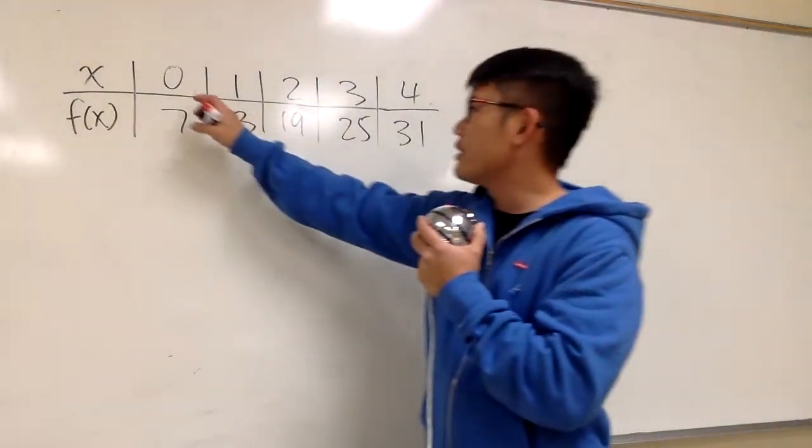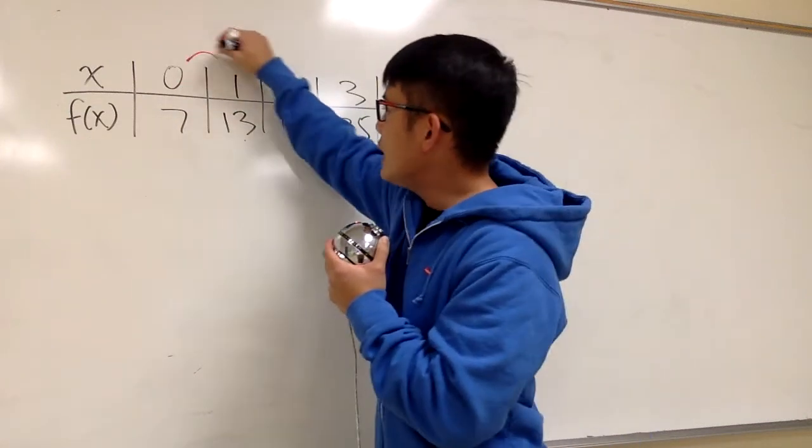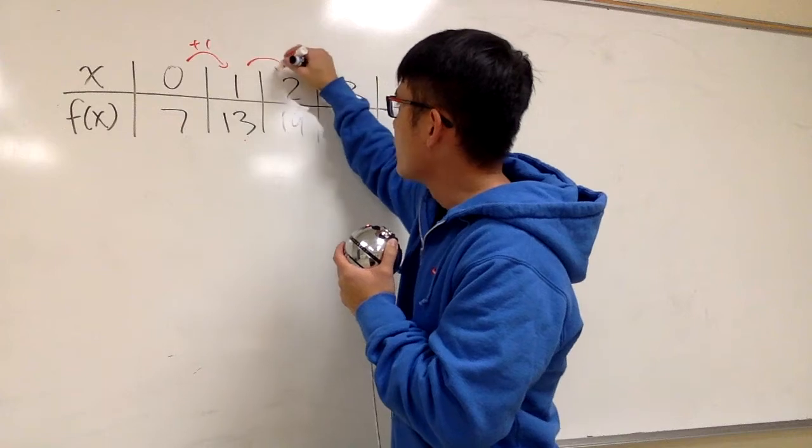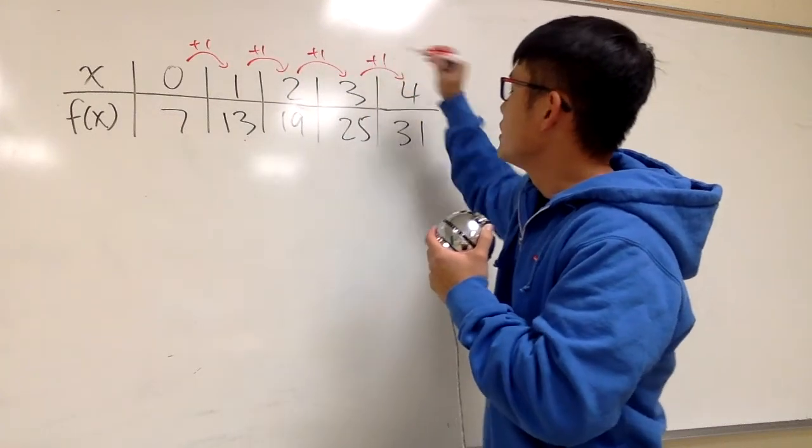So on the top right here, we see that x are going from 0, 1, 2, 3, 4, so each time it's just going up by 1. Nothing crazy, nothing tricky. That's good.